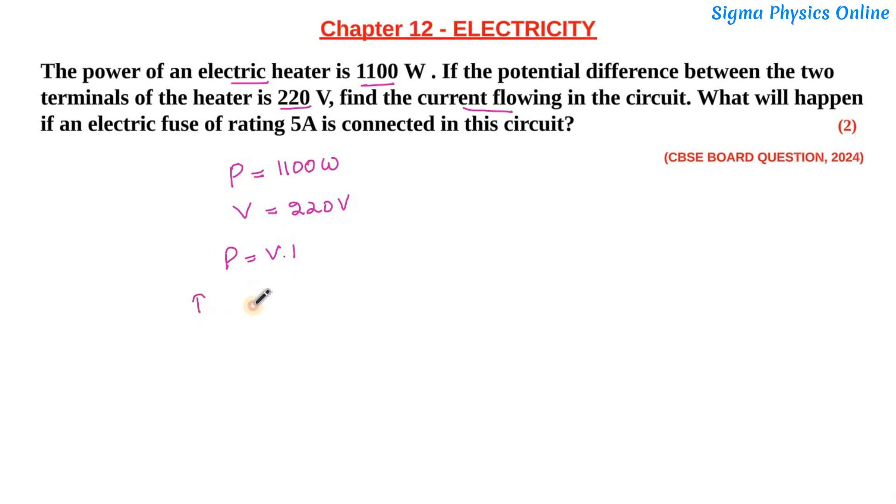Now power is given as 1100 watt and voltage is given as 220 volt. So this comes to be 5. So the current flowing in this circuit is 5 ampere. This is the value of current.